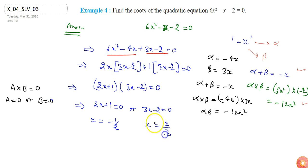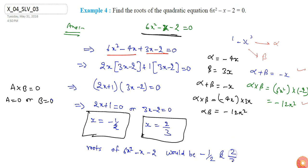Which means values of x minus 1 by 2 and my x equals to 2 by 3 will be roots of the quadratic equation 6x square minus x minus 2. So roots of 6x square minus x minus 2 would be minus 1 by 2 and 2 by 3.